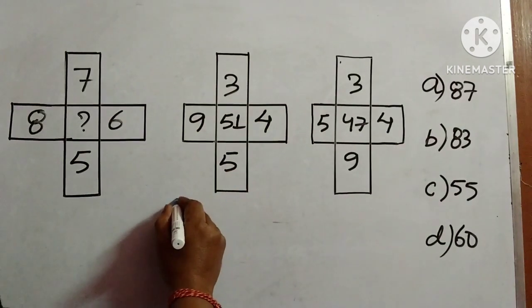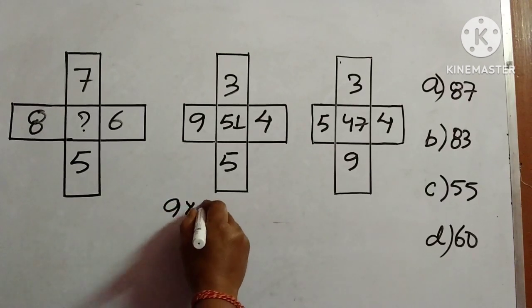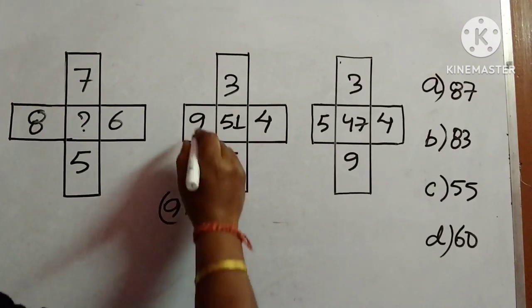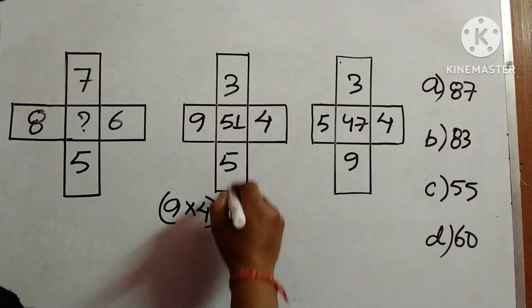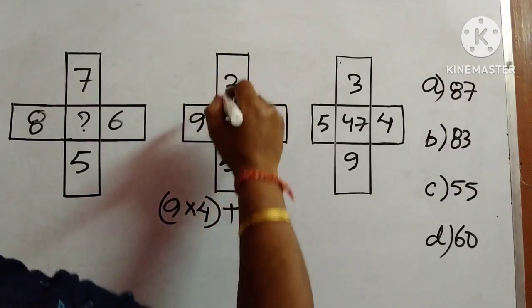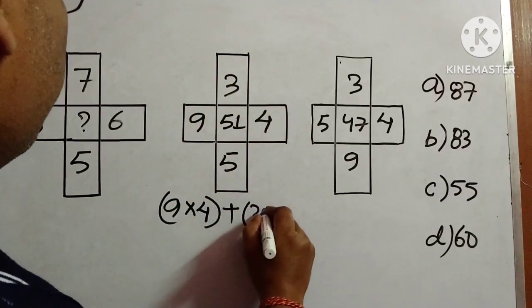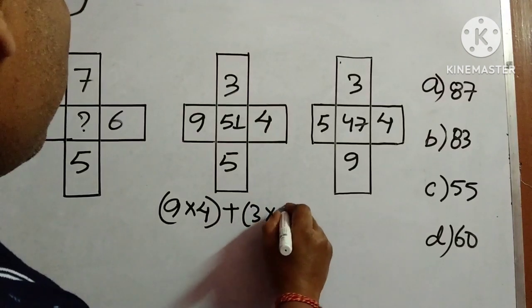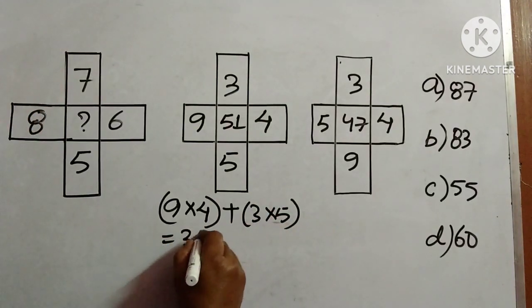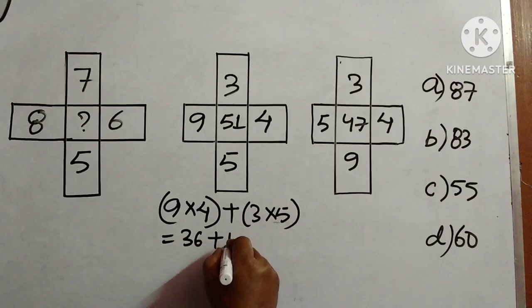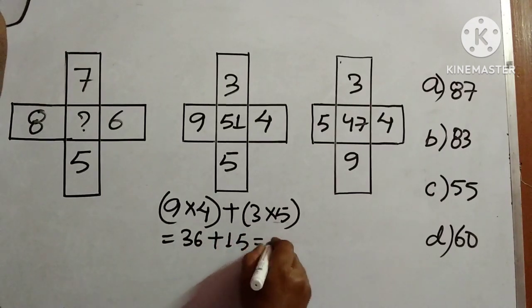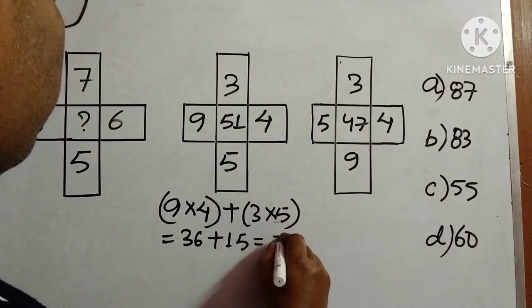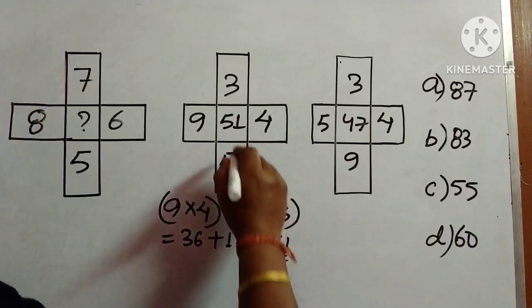We will consider this figure first. We will multiply 9 and 4, these two numbers, and we will add with the product of 3 and 5. So this is 36, 9 into 4 is 36, and 3 into 5 is 15. So how much is it coming? 51, which is given.